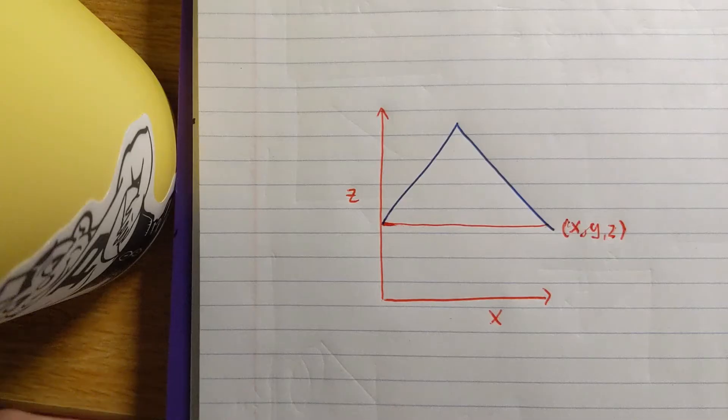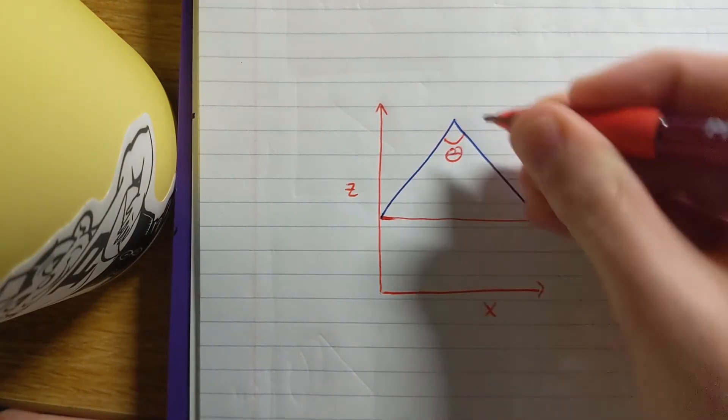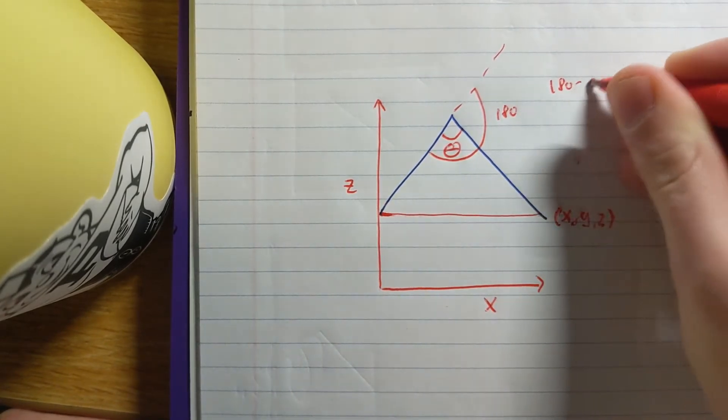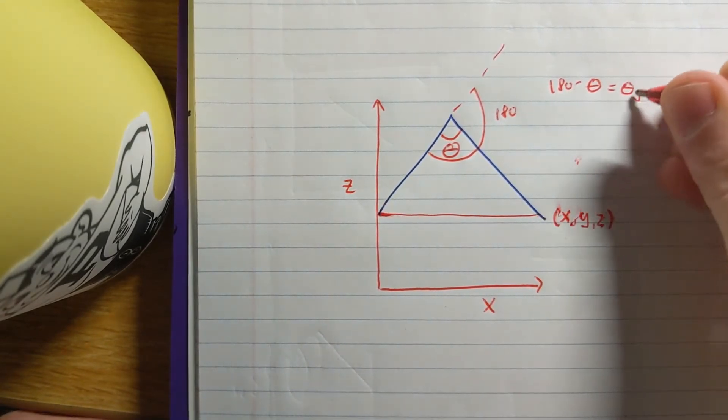The third servo is also relatively easy to calculate, just a little more complicated than the first servo. Again, all we need to do is use the law of cosines, but make sure we subtract the result from 180 degrees, since the second angle is relative to the first arm.